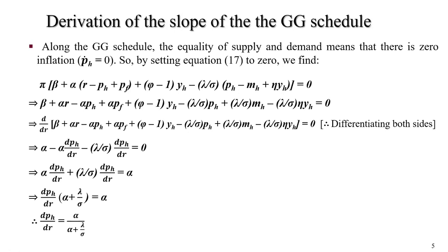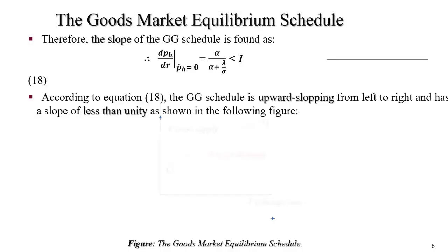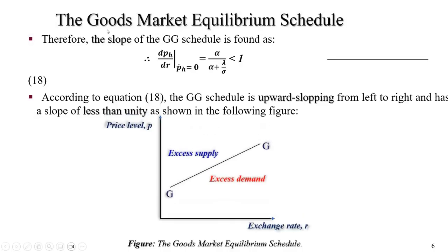The slope is alpha divided by alpha plus lambda sigma. Here we can see the slope is positive and less than 1.